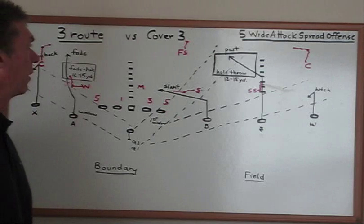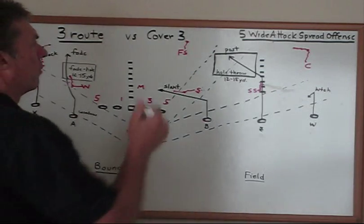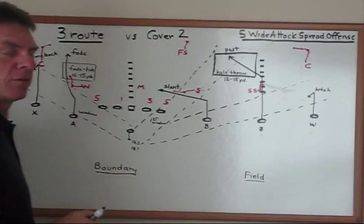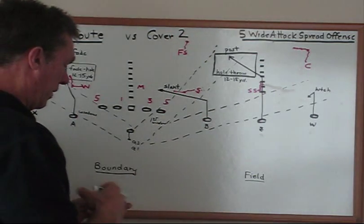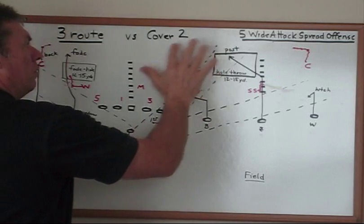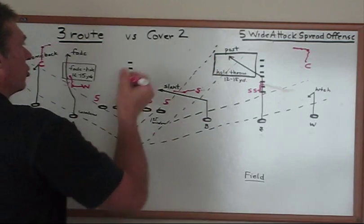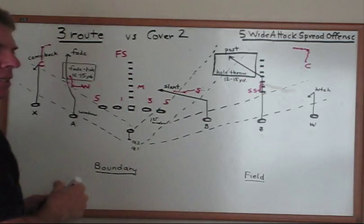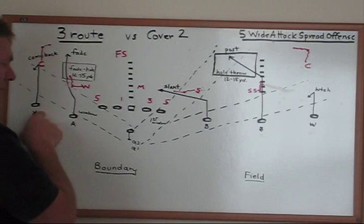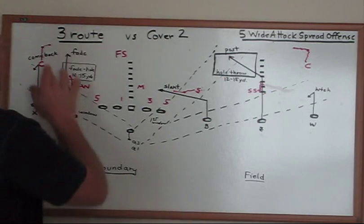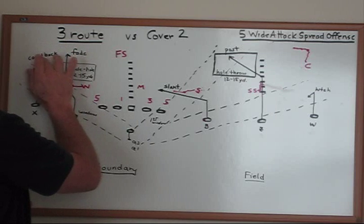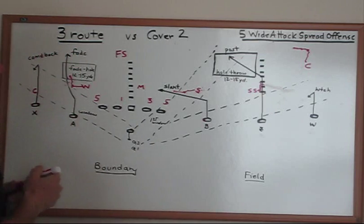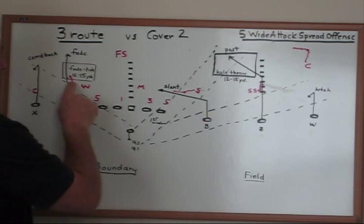We want to talk about running the three route versus Cover 2. When we see a Cover 2 look, the free safety is generally the one who moves over to the boundary hash. What we've found is that a lot of times he won't play right on the hash — he'll shade over to the boundary side to be able to get to the X a little bit easier. And so when he moves over, that corner will rotate down, play head up or play outside, following him into the wheel linebacker or free safety.